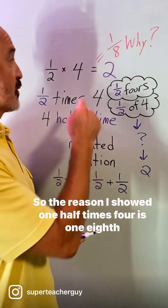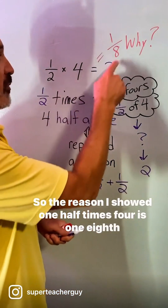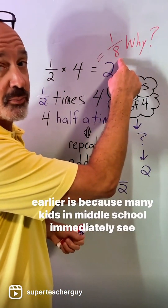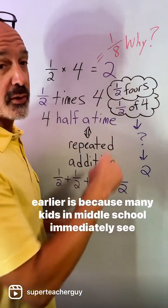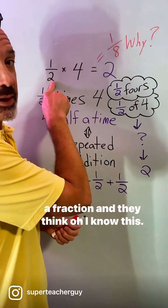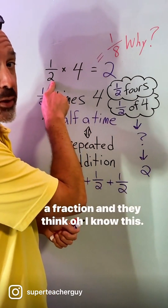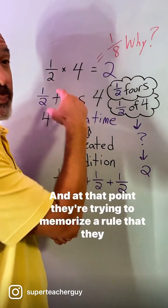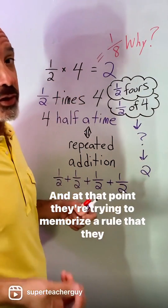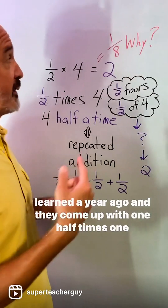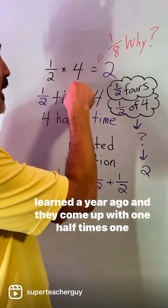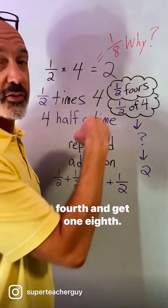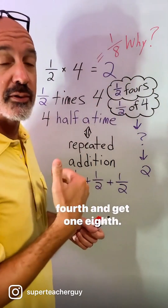The reason I showed 1 half times 4 is 1 eighth earlier is because many kids in middle school immediately see a fraction and they think, ooh, I know this — keep, change, flip. At that point, they're trying to memorize a rule they learned a year ago and they come up with 1 half times 1 fourth and get 1 eighth. That makes no sense.